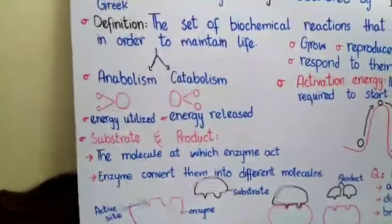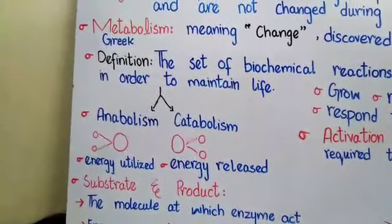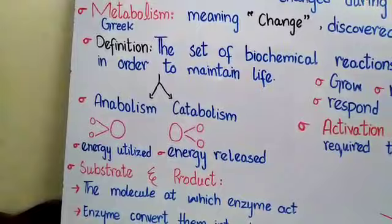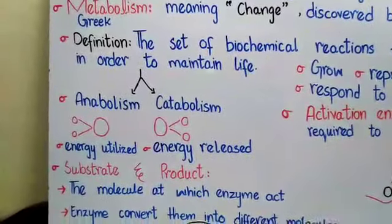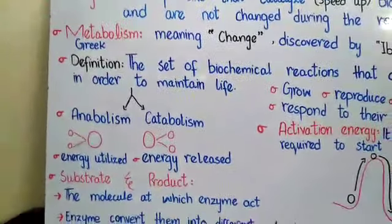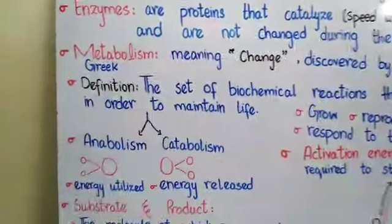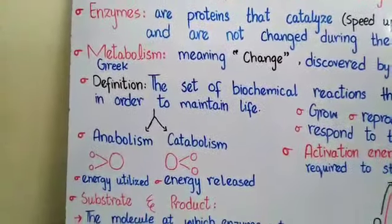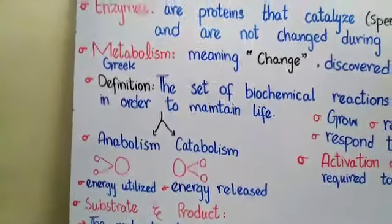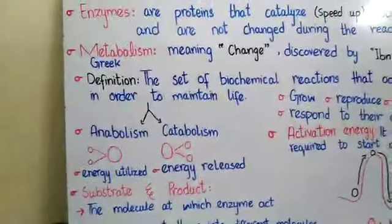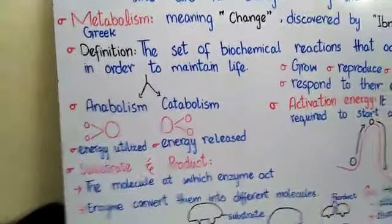Before discussing substrate and product, during metabolism, chemicals are transformed from one form to another by enzymes. Enzymes are very crucial to metabolism because they act as biocatalysts. They speed up and regulate metabolic pathways — reactions that would take five minutes are completed in two minutes.